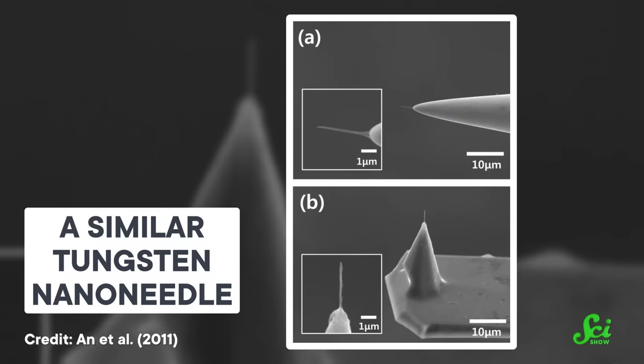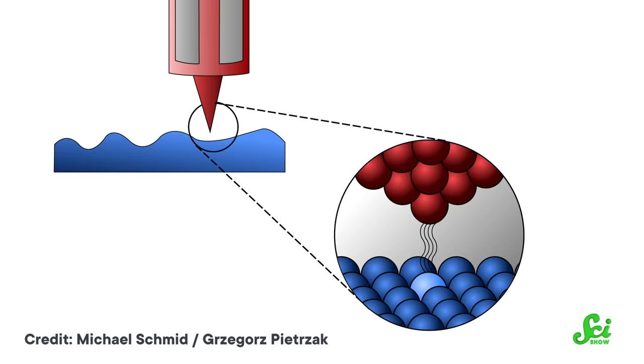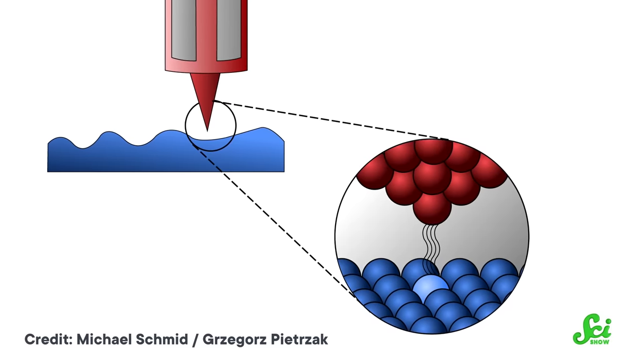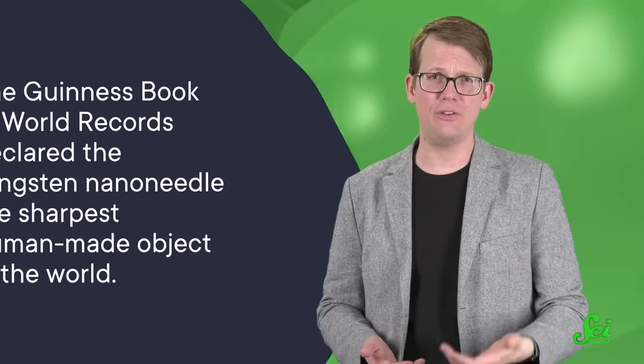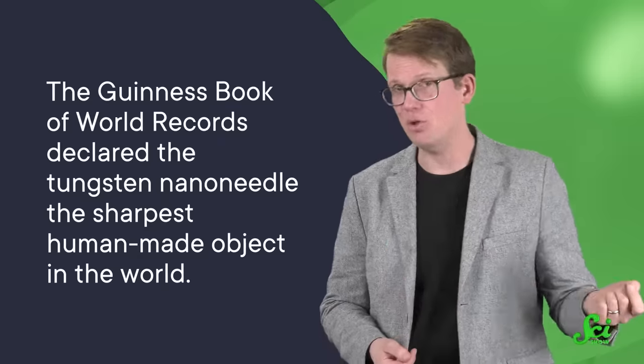For instance, the smallest radius we've ever achieved on a man-made tool belongs to a tungsten nanoneedle created by scientists at the University of Alberta. It's a super-thin structure that produces a tiny electrical current that jumps between the needle and a surface. By doing so, the needle tip can identify the positions of individual atoms on the surface and help us build up a picture of what the material looks like. And that tip is—wait for it—just one atom wide. You cannot get any tinier than that. It's because of this ridiculously small radius that the Guinness Book of World Records declared the tungsten nanoneedle the sharpest human-made object in the world. Which is cool and all, but as we said in the beginning, there is one small problem.